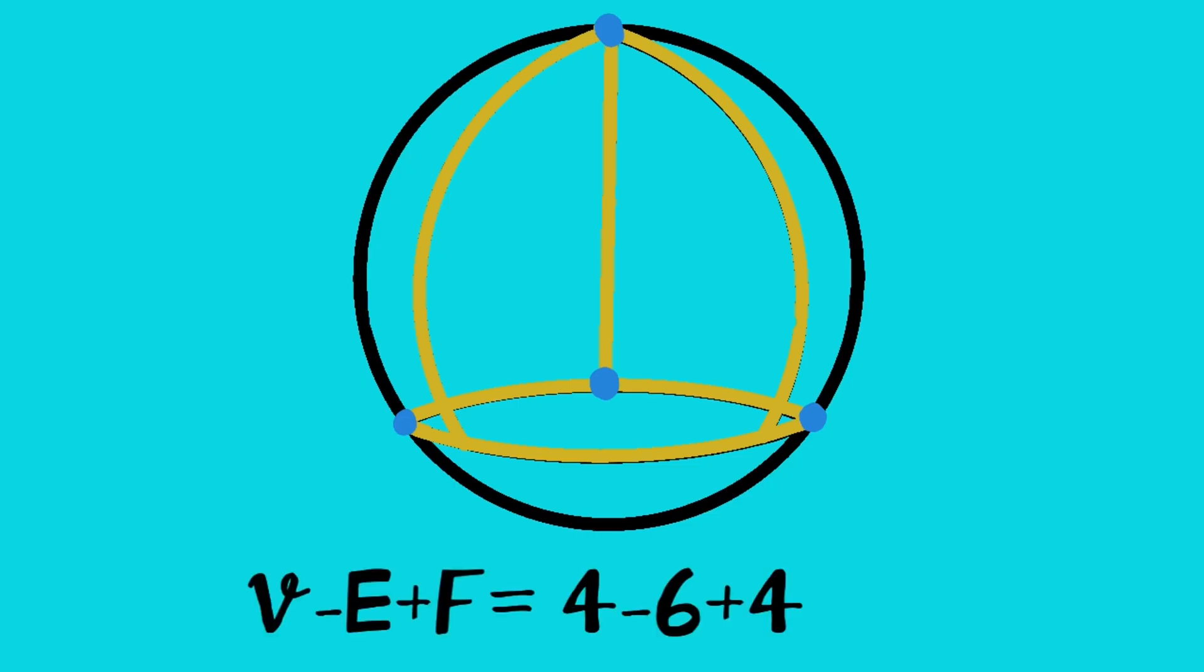For a sphere, the Euler characteristic can be found by dividing it in geodesic triangles. Here, there are four vertices, six edges, and four faces.